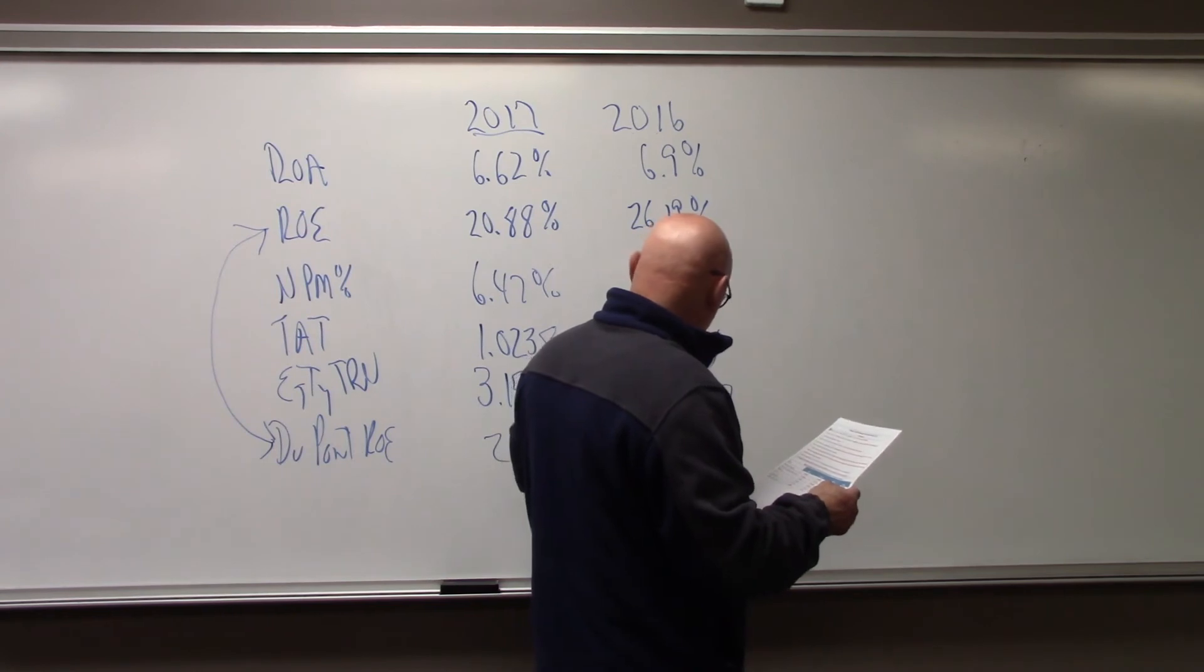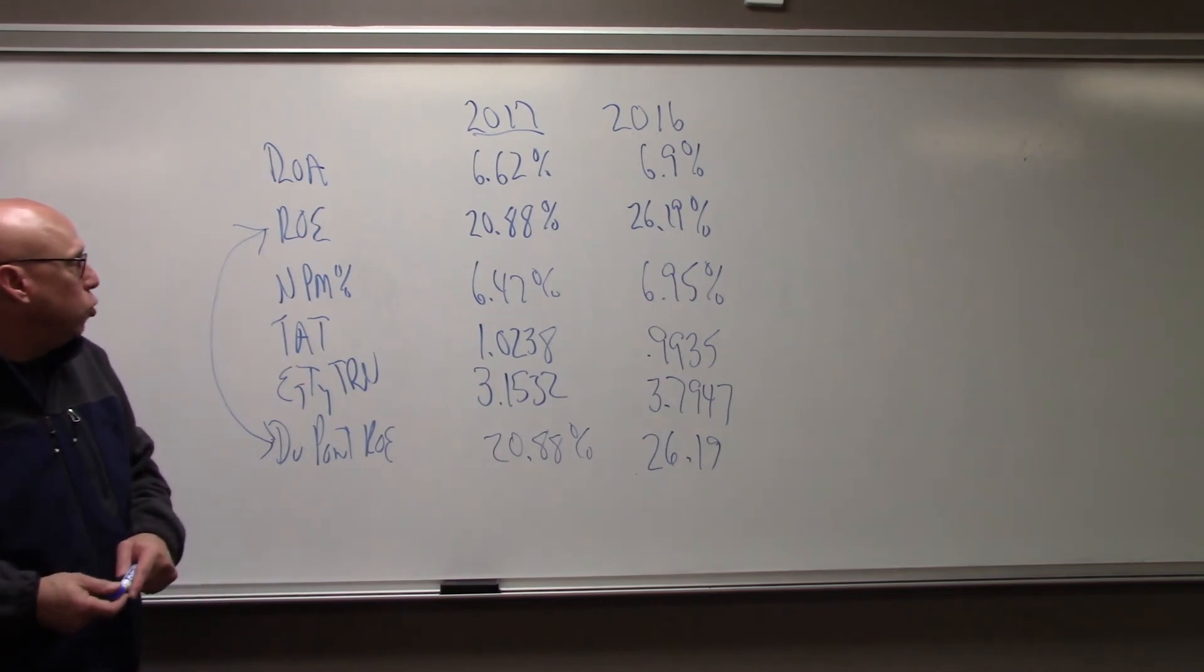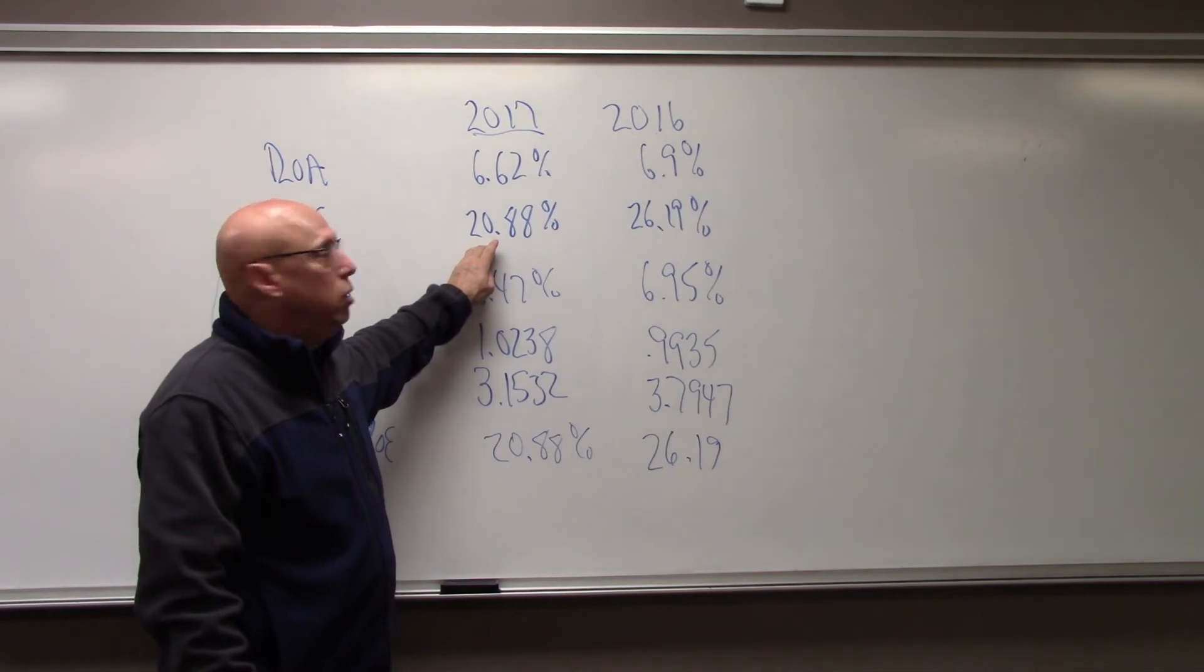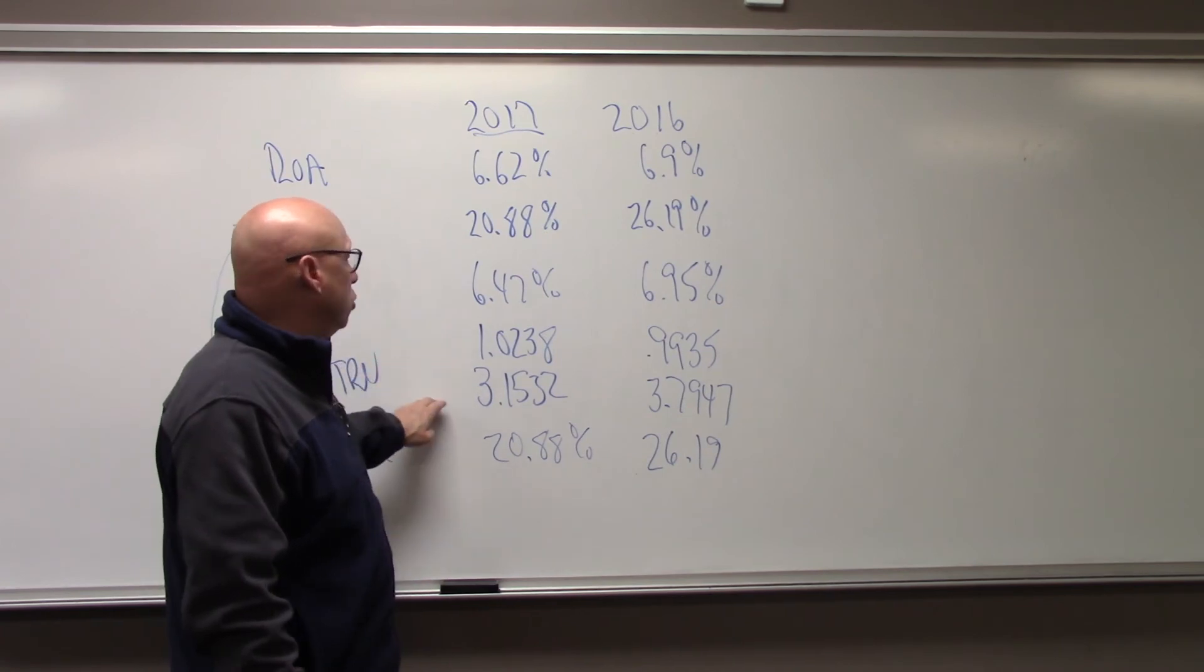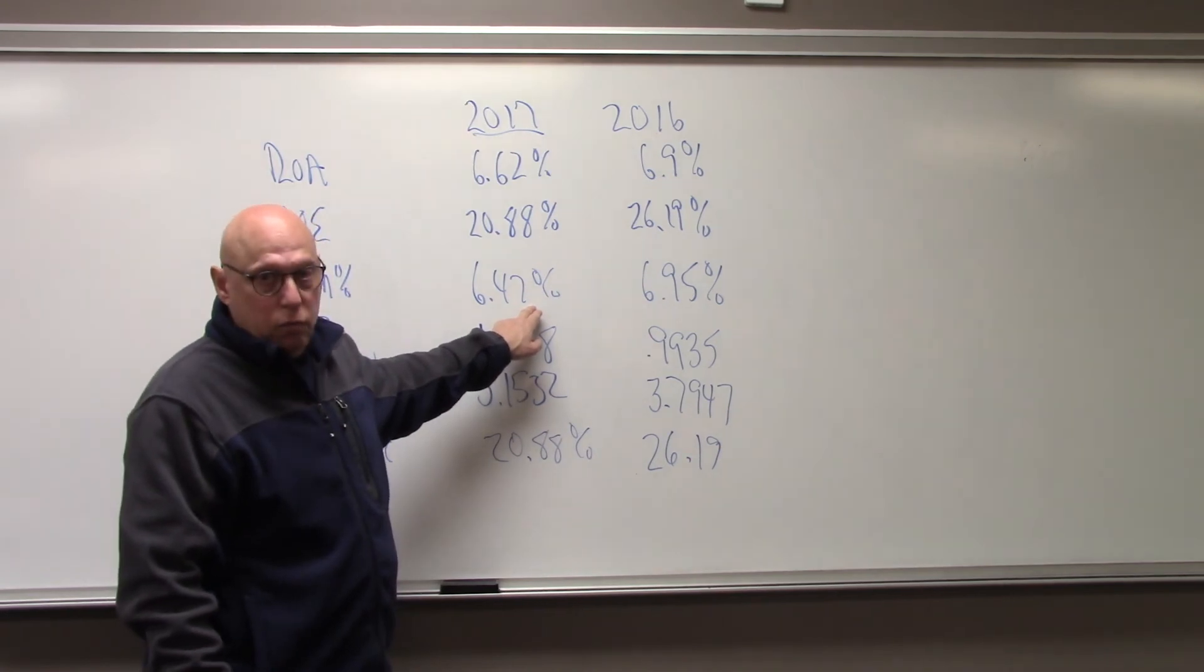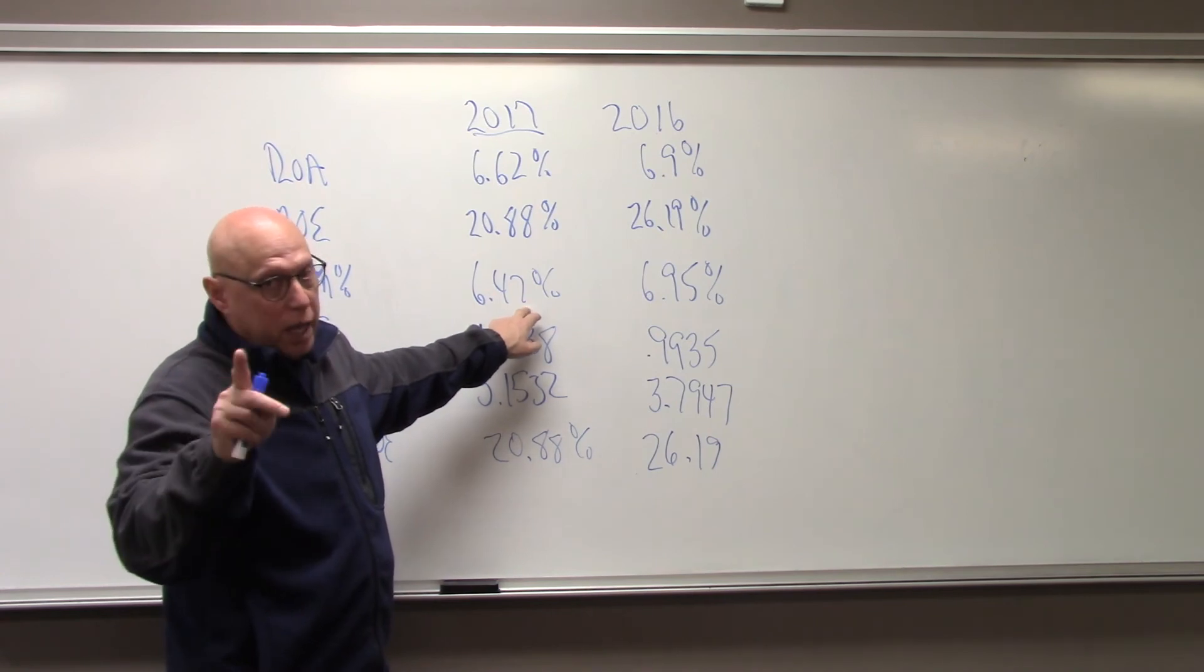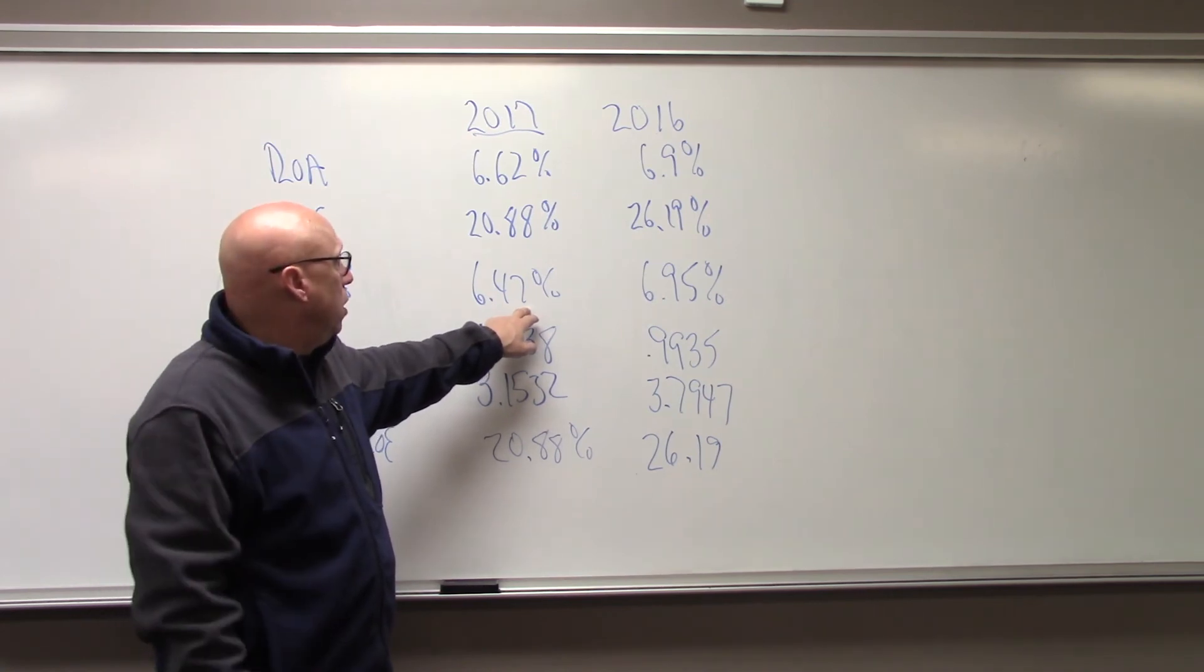What we see happening in 2017 versus 2016 is that return on equity went from 26% to 21%. That is a huge decline. The question is, why? Breaking it down into the three components, we'll be able to see. Their profitability went down. We saw in homework five that their gross profit margin percentage dropped. We're not sure why, but we have to ask management that question. It's either pricing, or cost of goods sold, or it's mixed.